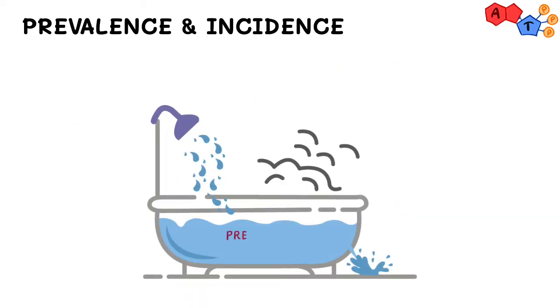Prevalence counts the existing cases out of all people in the population, while incidence shows us a rate of how many new cases are developing.